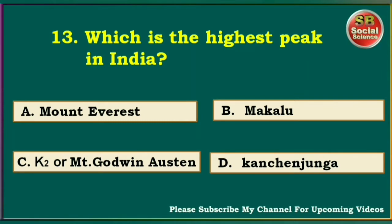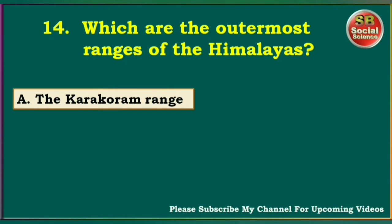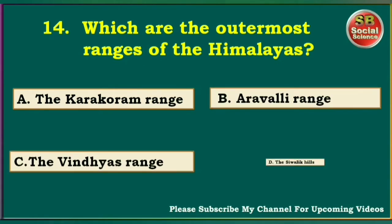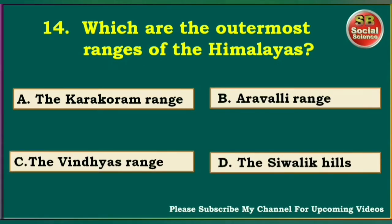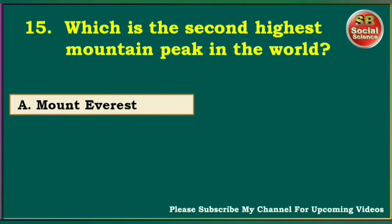Which are the outermost ranges of the Himalayas? The Karakoram Range, Aravali Range, the Vindhyas Range, the Shivalik Hills. The right answer is the Shivalik Hills. Which is the second highest mountain peak in the world? Mount Everest, Nanda Devi, K2 or Mount Godwin-Austin, Kanchanjunga. The right answer is K2 or Mount Godwin-Austin.